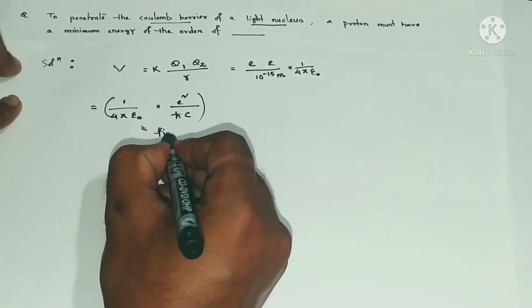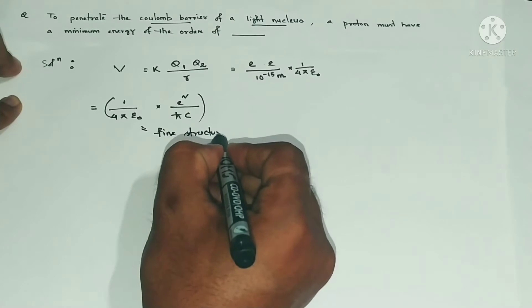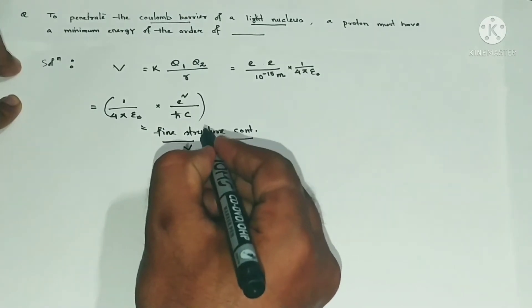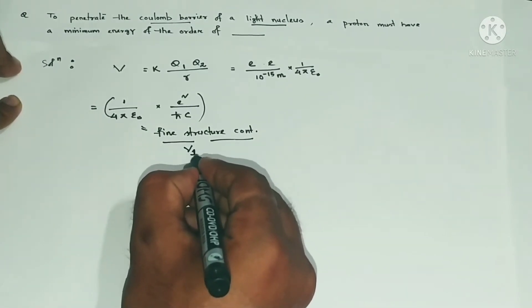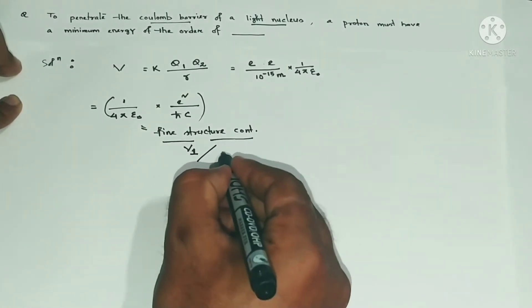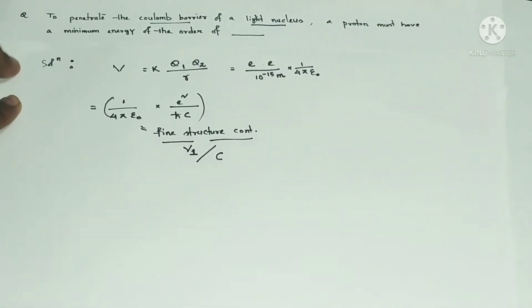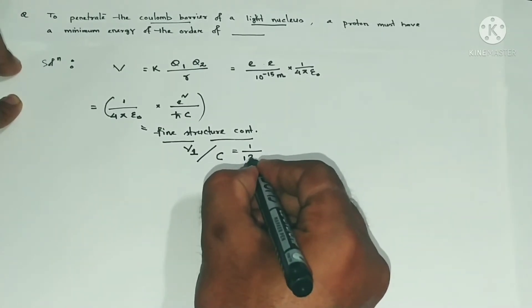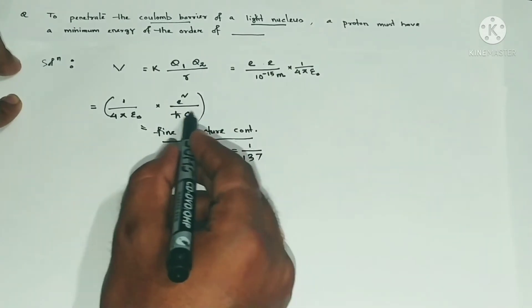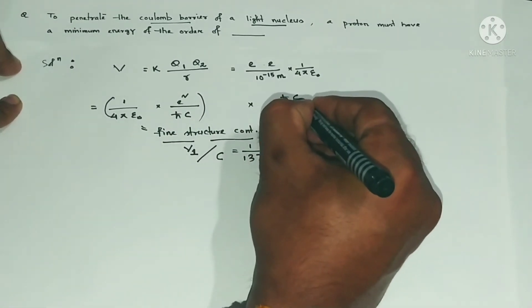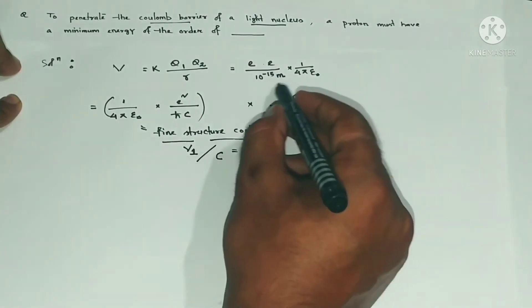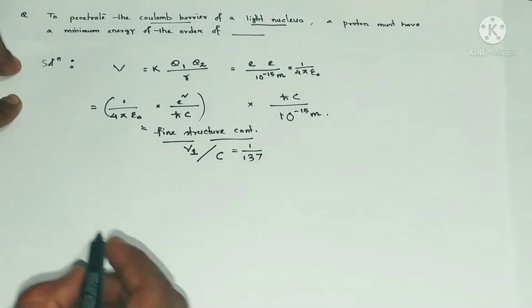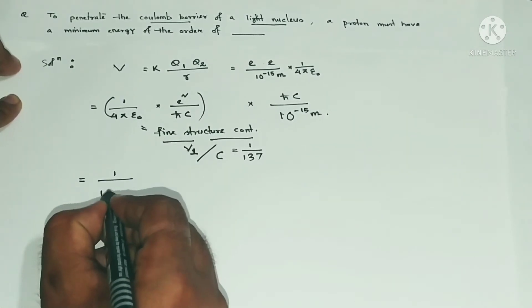That is the fine structure constant α, which is the ratio of the velocity of the electron in the first orbit of the hydrogen atom divided by the speed of light in vacuum — v₁ over c. This gives us a dimensionless constant whose value is 1/137. We are then left with h-bar times c in the numerator and 10 to the minus 15 meters in the denominator, so those cancel appropriately, leaving 10 to the minus 15 meters.